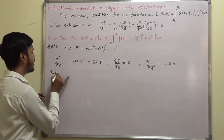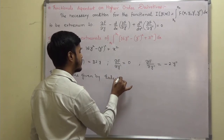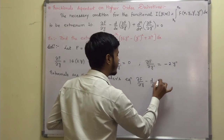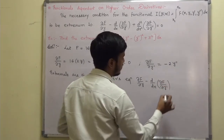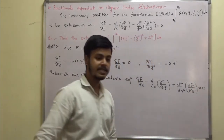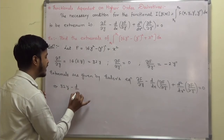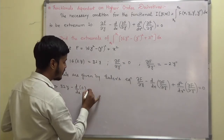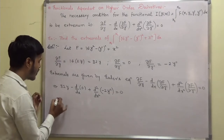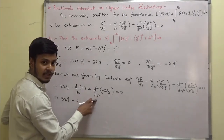The extremals are given by Euler's equation: del f / del y  minus  d/dx of (del f / del y')  plus  d²/dx² of (del f / del y'')  equals zero. Substituting the values: 32y  minus  d/dx of 0  plus  d²/dx² of (minus 2y'')  equals zero.